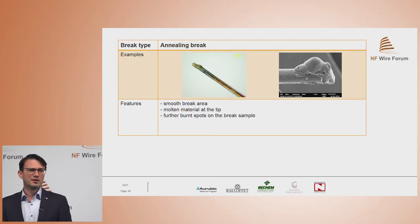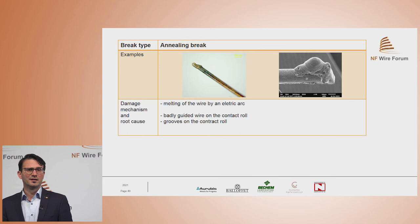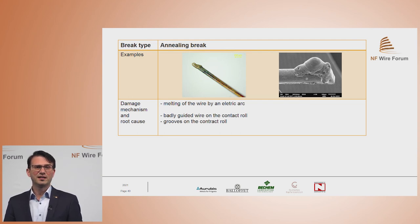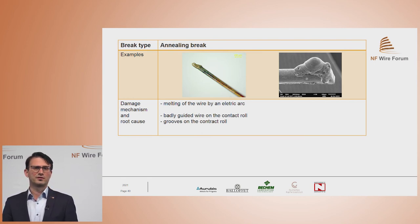The last type is the annealing break. You see a smooth surface break area with molten material at the tip, and normally further burned spots on the break sample. The damage mechanism and possible root causes are melting of the wire by an electric arc. The material is normally annealed at the end of production, and root causes can be badly guided wire on the contact rolls or grooves on the contact roll.